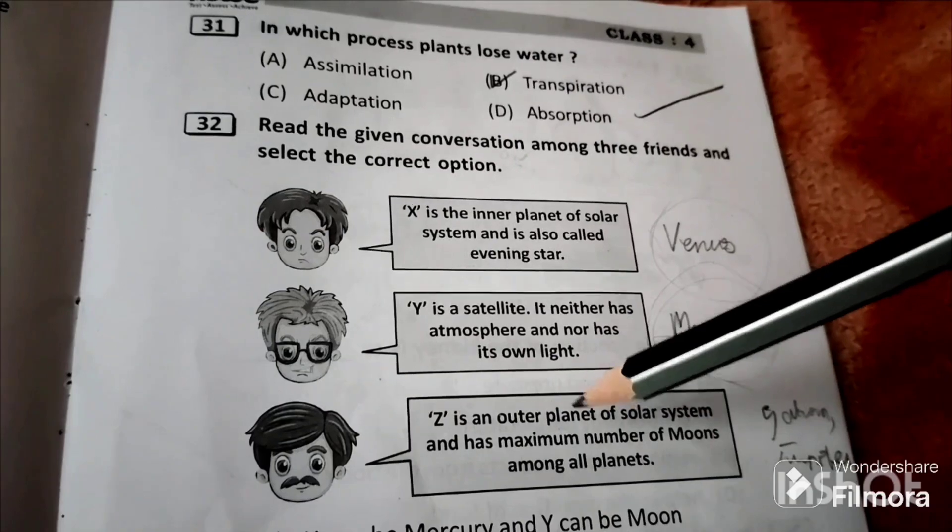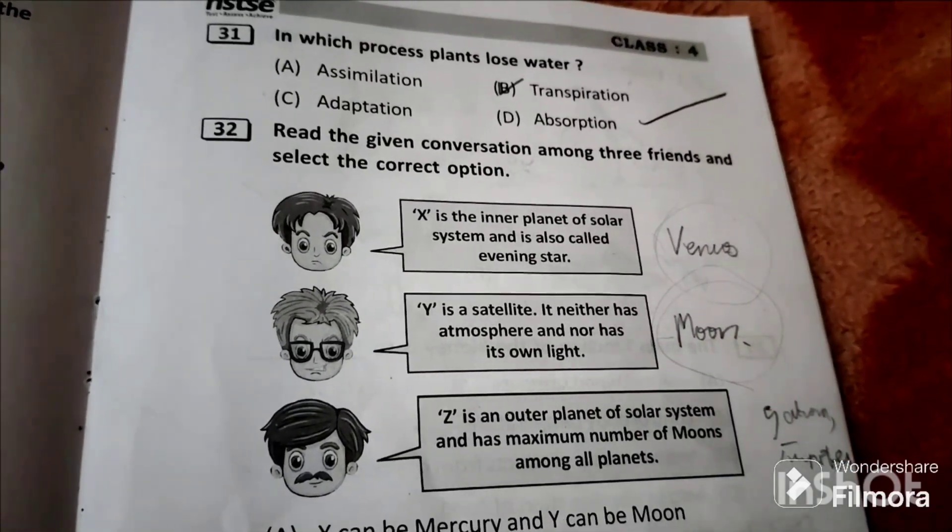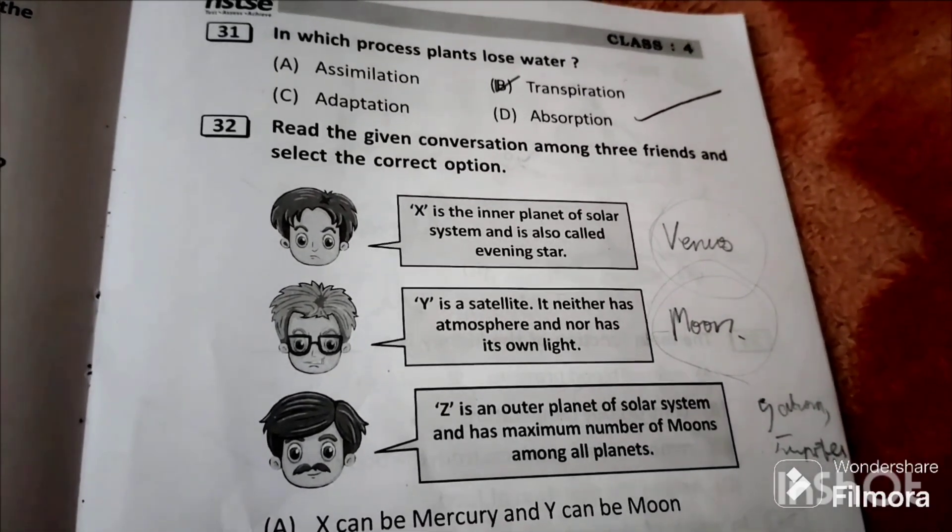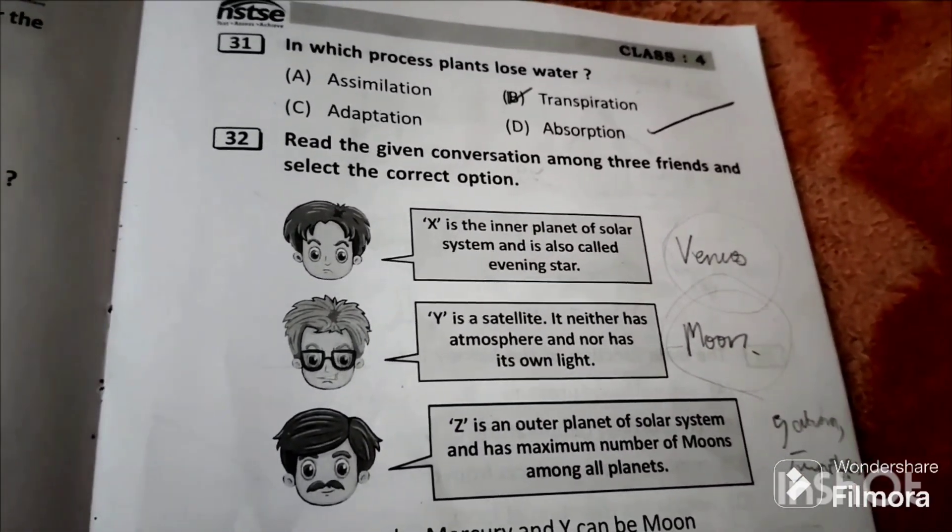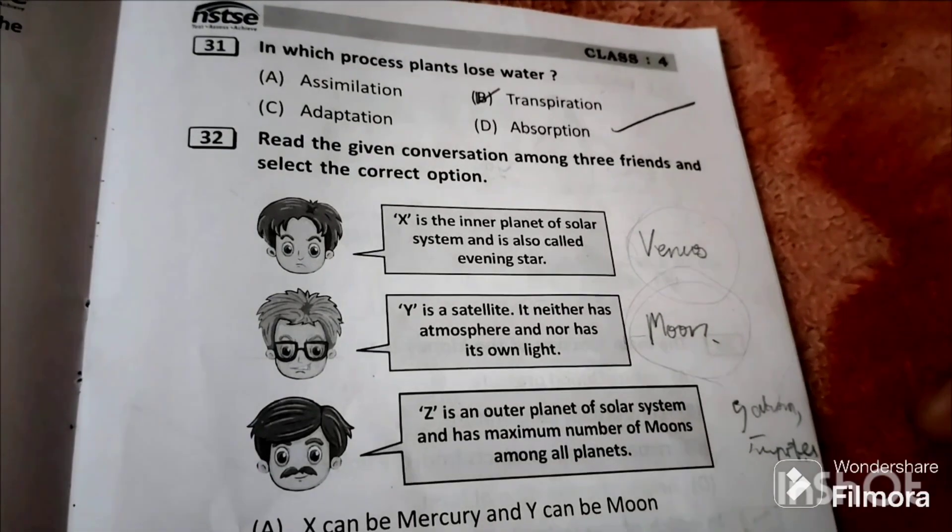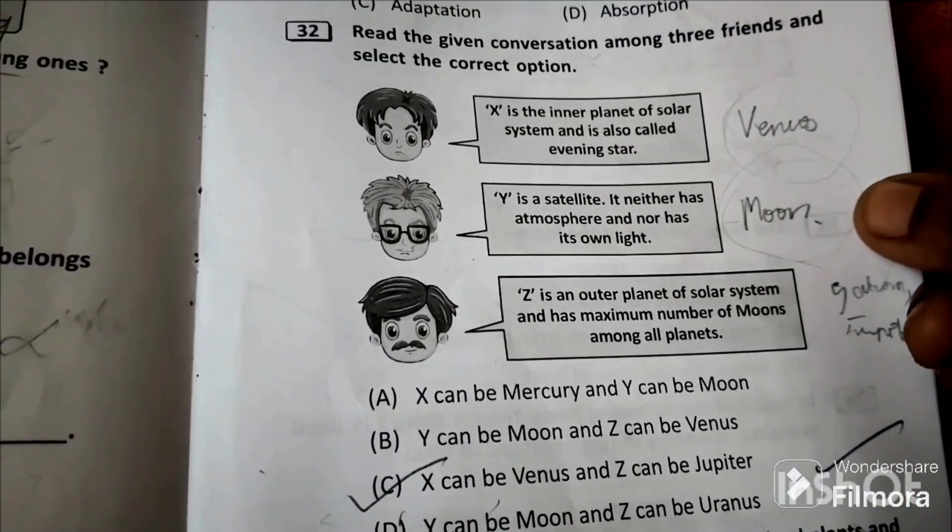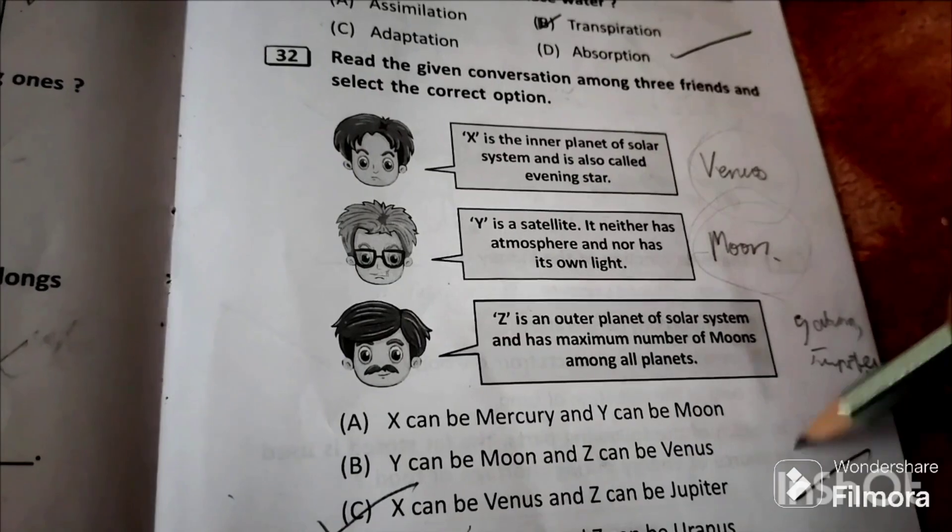Z is an outer planet of solar system and has maximum number of moons among all planets. Among outer planets Jupiter, Saturn, Uranus, Neptune, the one which has maximum number of moons is Jupiter.